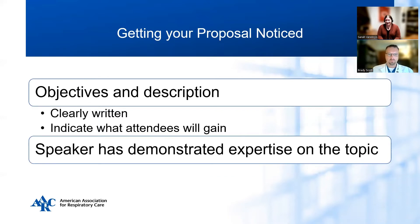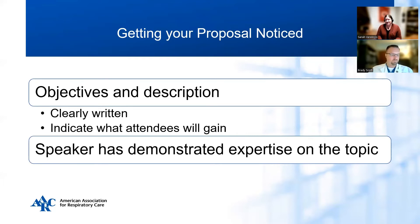Back to objectives and descriptions: one of the things that will really affect whether your proposal is noticed is the combination of objectives and descriptions. They must be clearly written and indicate what the attendee will gain. The objectives must be behavioral and distinctly different from each other. If you have two objectives that basically say the same thing, that's not going to get your proposal noticed. The submitted description is what's published in the program, so be very careful and make sure it highlights the relevancy of the topic, indicates what attendees will take away, and that the speaker is able to demonstrate expertise on the topic.